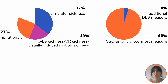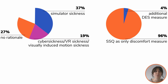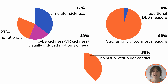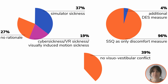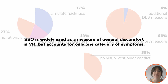Furthermore, in 96% of the papers, the SSQ was the only measure of discomfort employed, and in only 4% of papers an additional measure, namely digitalized strain, was reported. Lastly, in 39% of the papers, no visual-vestibular conflict was present, which is known to be the main cause of simulator sickness. Taken together, these results indicate that the use of the SSQ has become common practice in VR research and that the questionnaire is often applied without specifically intending to assess simulator sickness.